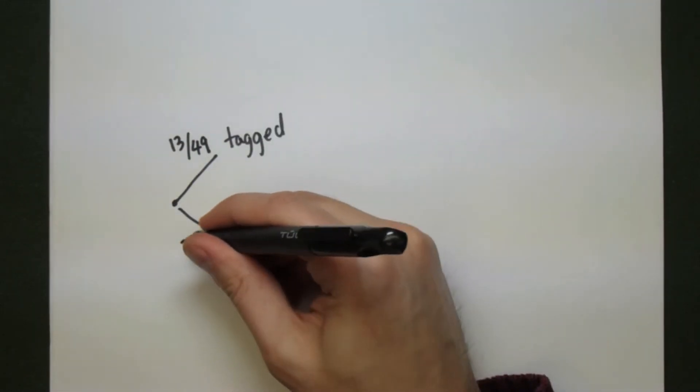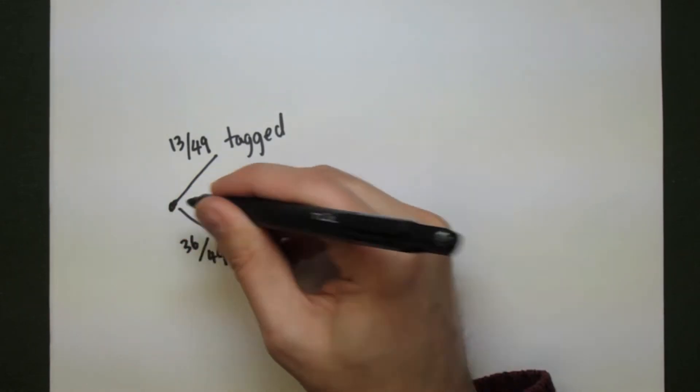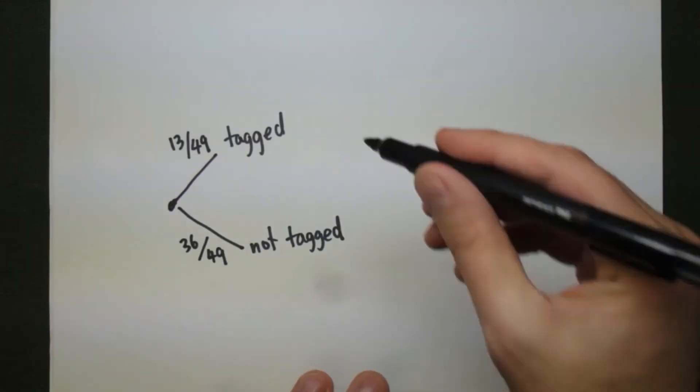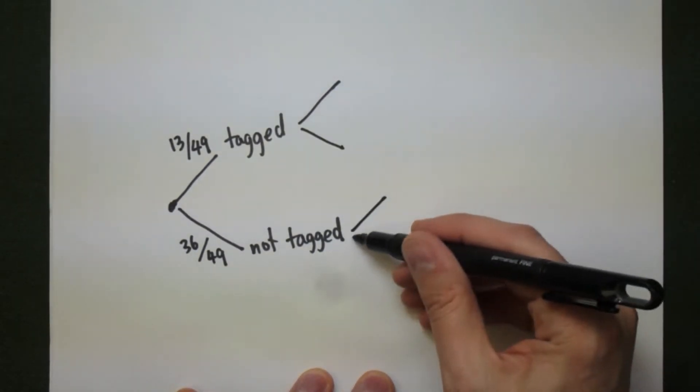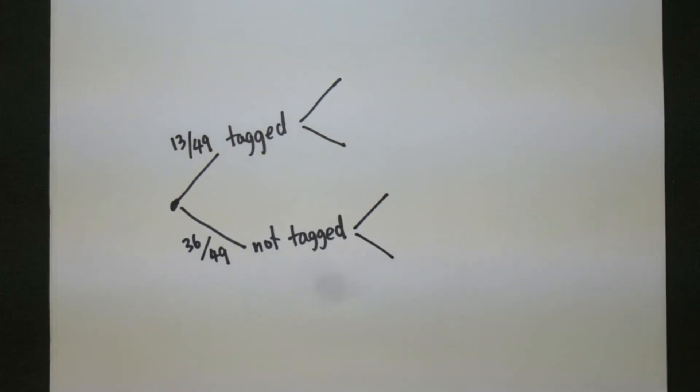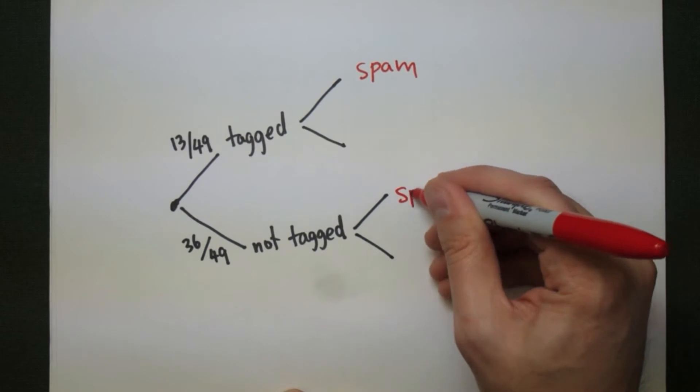13 out of the 49 were tagged, and 36 out of the 49 were not. From each of these, we now have to split it into whether or not the message is actually spam or not. So we split it up into two branches for each of these. One of the branches will be spam, and the other branch will be not spam.